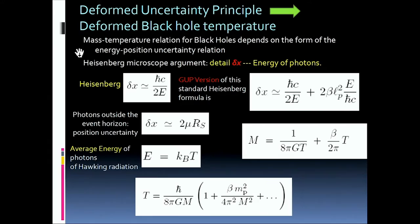Essentially using an argument similar to the Heisenberg microscope argument. Well, the Heisenberg relation would be this, and the GUP version of the Heisenberg relation is this. And you can translate quite easily this relation into a relation between the mass of the black hole and the temperature of the black hole. Obviously, here there is again the deforming term, the deforming parameter beta.